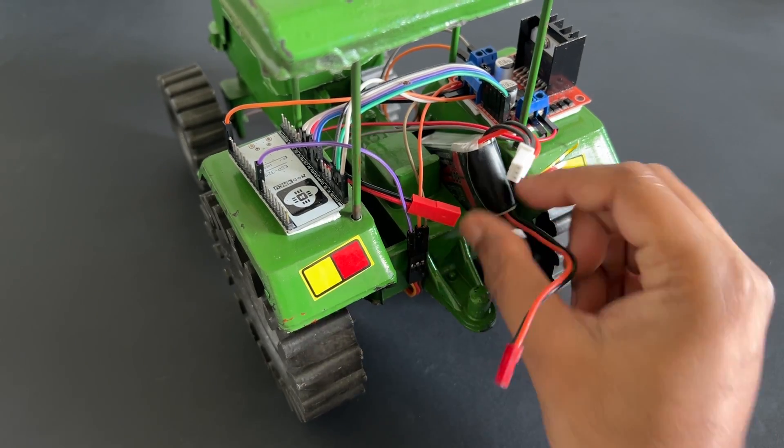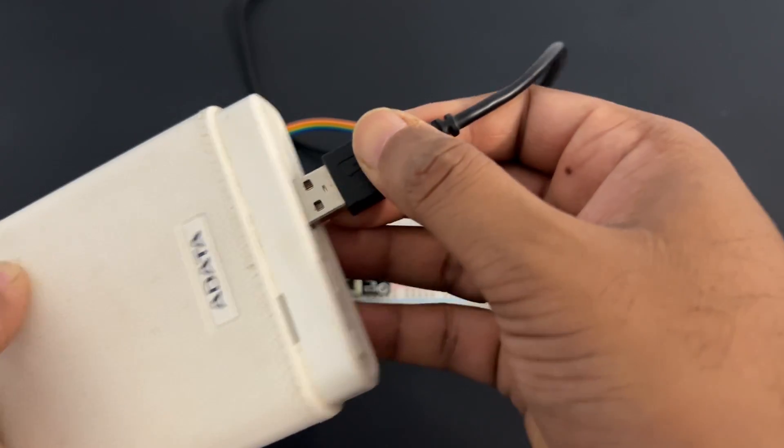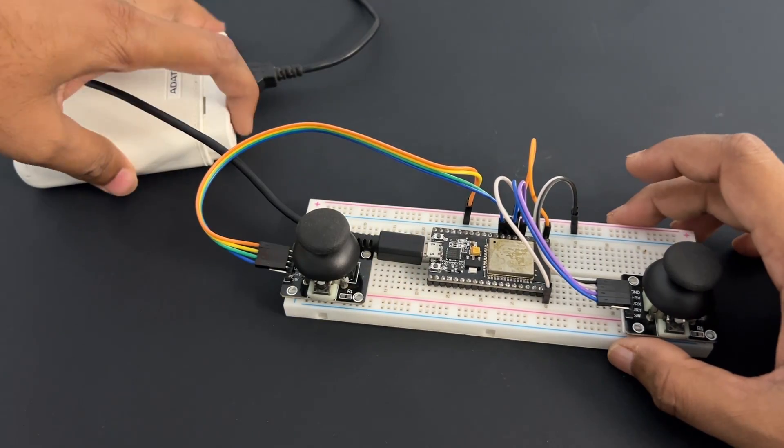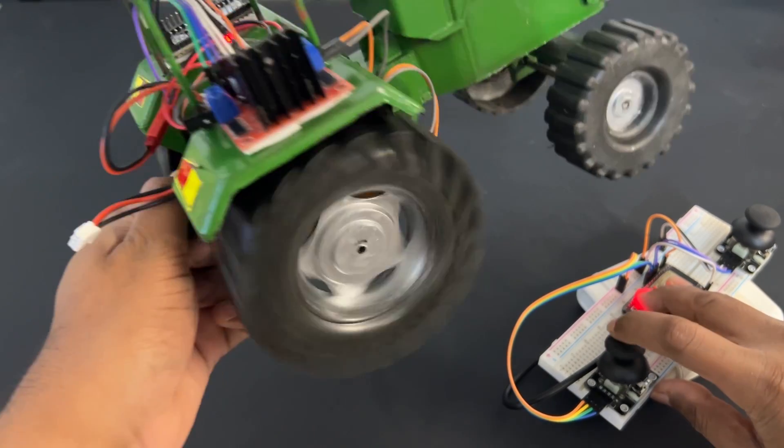Now connect battery to tractor. Provide power to transmitter through power bank using 5V supply. That's it. Let's see how it works. As you can see tractor is controlled using joystick.